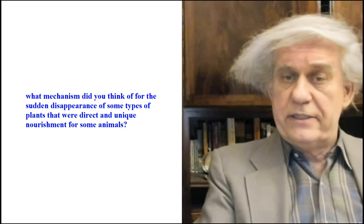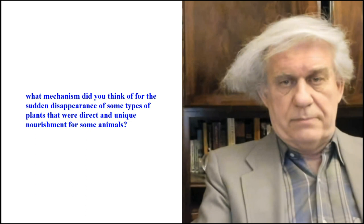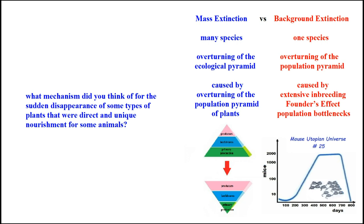Let me start by clarifying this. We want to distinguish background extinction from mass extinction — two different mechanisms. Mass extinction involves many species. Background extinction is one species disappearing. What's the general mechanism in a mass extinction? The overturning of the ecological pyramid. And in background extinction, it's the demographic pyramid that overturns.